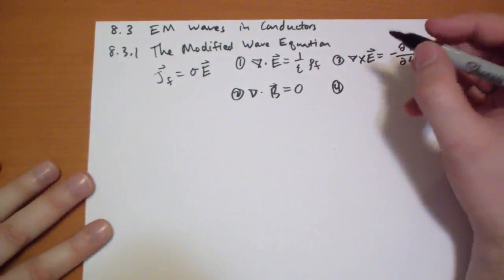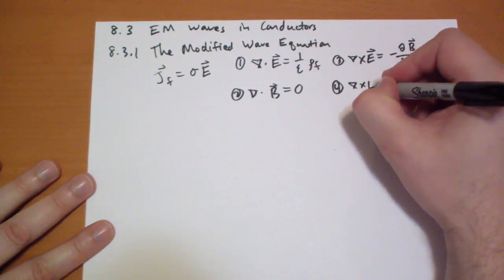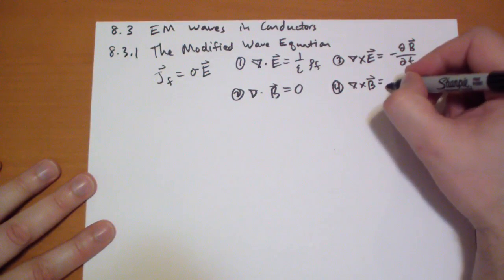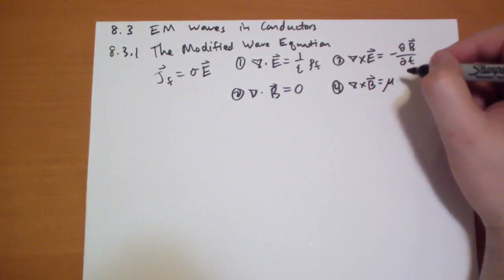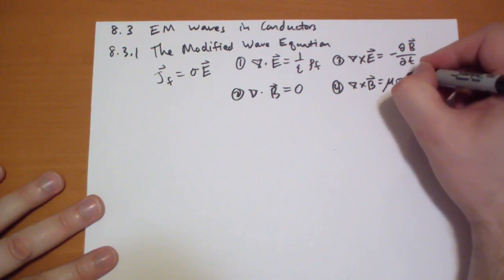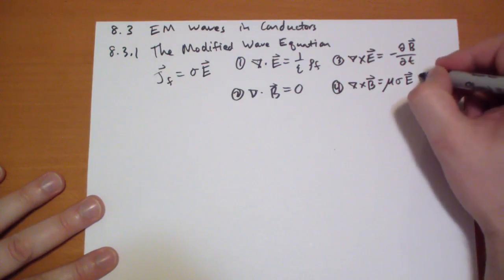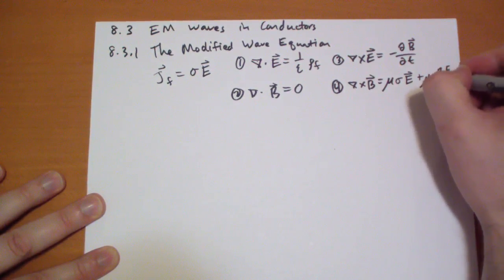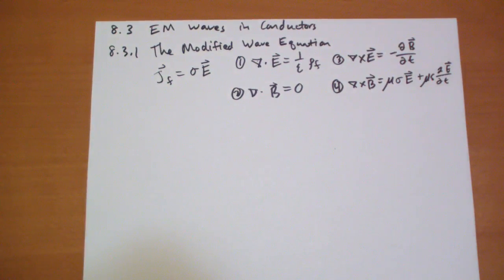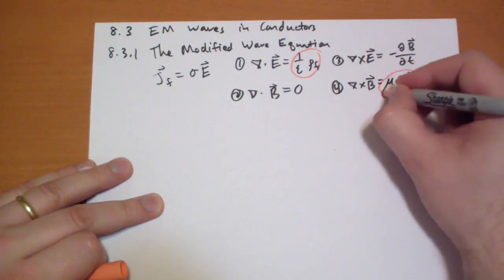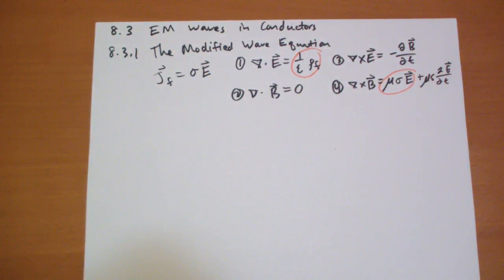we have this new term that we have to worry about. Before, so now we have mu times the current, but we have the current is just sigma E plus mu epsilon dE by dt. Okay, so the monkey wrench, there's actually two monkey wrenches we have to worry about. We could have a free charge and we could have that current there.